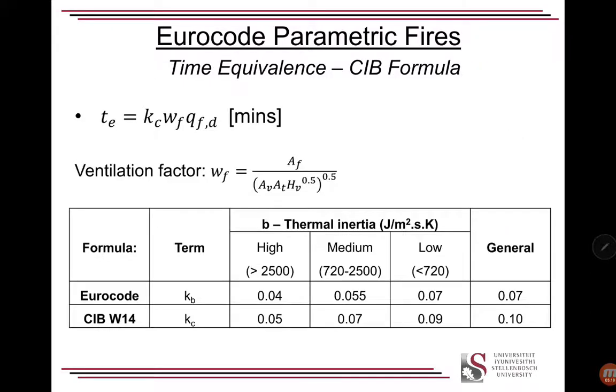Then there's also a CIB, from CIB, the W14 formula. And the equivalent time is similar to that, based upon an adjustment factor, ventilation factor, and then the fuel load. Where there's also a ventilation factor calculated same as above, but they're just a slightly different form. And the factors to put in, that kb in the Eurocode and kc in the CIB W14 formula, are listed here for either high thermal inertia, low thermal inertia, and general value.